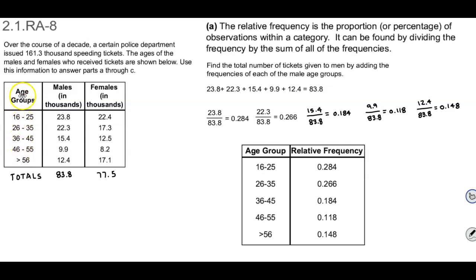So the first column is the age groups. The second column is males in thousands, females in thousands is the third column. And if we total up the column for males, if we add these all up we get 83.8. If we add up the total column for females is 77.5.